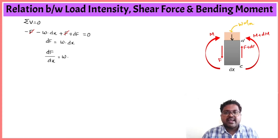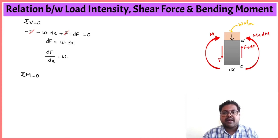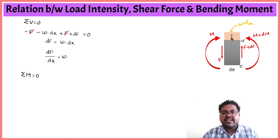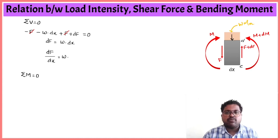Now using the second condition — summation of moments equals zero — I am considering the moments acting on section CD. From the left-hand side, if a moment is acting in the clockwise direction that is positive, and if acting in the anti-clockwise direction that is negative. First, M is acting in the clockwise direction, which is positive.